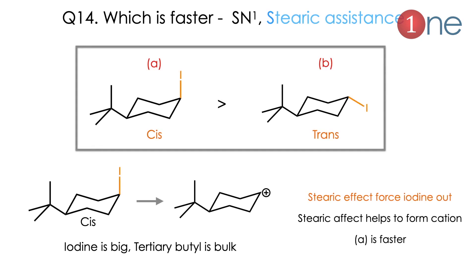Next: steric assistance. Compare the SN1 reaction rate between A and B. A and B differ only in iodine being in axial versus equatorial position. A is favorable because steric repulsion between the tertiary butyl group and the axial iodine is very high — the tertiary butyl group creates strain and helps remove the iodine, providing steric assistance to the reaction. A is faster than B. In B, iodine is equatorial, the strain is relieved, and there is no steric assistance.